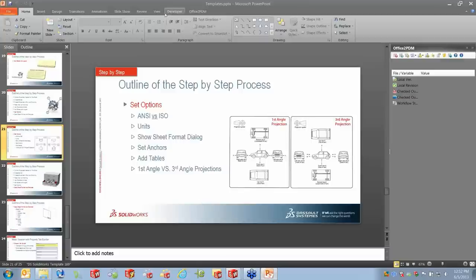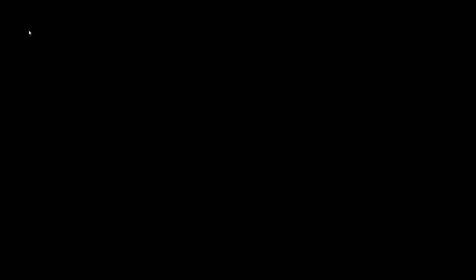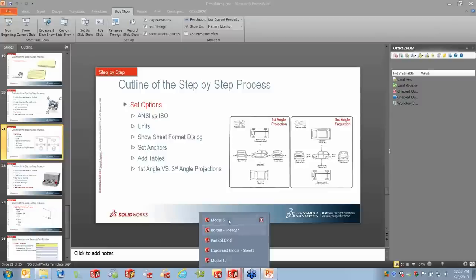The next step is to set the options on our template — make sure everything is correct in Document Properties: ANSI versus ISO standard, units, show sheet format dialogue on add new sheet. There's also something called Anchors. Under System Options, there's the option 'Show Sheet Format Dialogue on Add New Sheet.' If this is on, it brings up the dialogue and you can pick any sheet format. If it doesn't bring up the dialogue, it automatically uses the last one specified — in my case Sheet 2. A gotcha: if this option is on and you send your template to someone who doesn't have the sheet format, it will blank out your template.